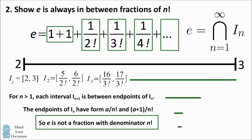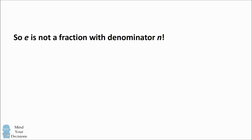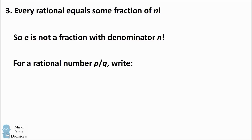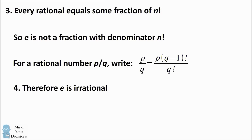This leads us to our contradiction. E is not a fraction with any denominator n factorial. However, any rational number will always equal some fraction of n factorial — consider a rational number p over q. If we multiply numerator and denominator by q minus 1 factorial, we have p times q minus 1 factorial over q factorial. So every rational number can be expressed as a fraction with denominator q factorial. Since E can never be represented this way, we conclude E is irrational.